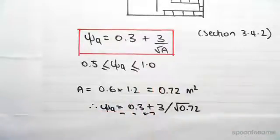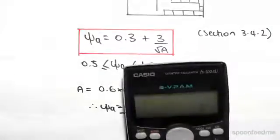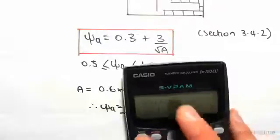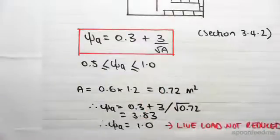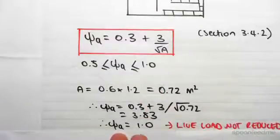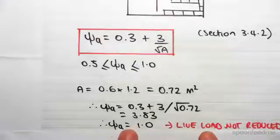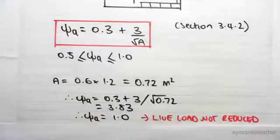3 on the square root of 0.72, so 3 divide square root of 0.72 plus 0.3 gives us 3.83. Now 3.83 is greater than 1, so that means that psi a equals 1, which means that the live load cannot be reduced in this case.